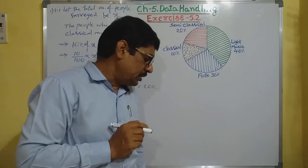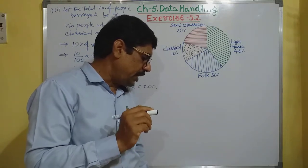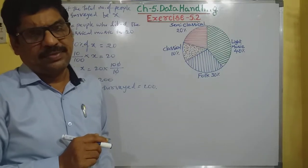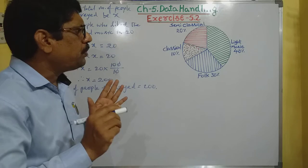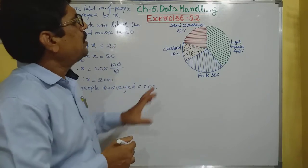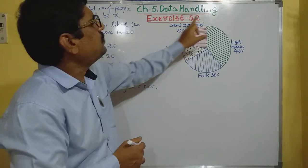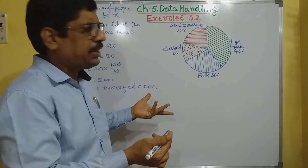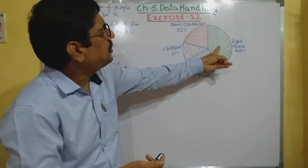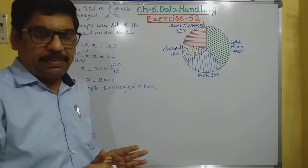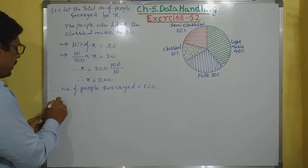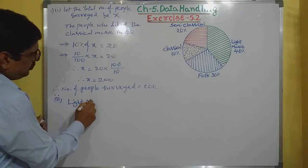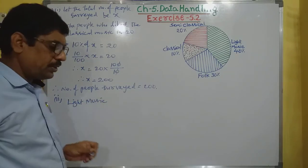The second question: which type of music is liked by the maximum number of people? By looking at the picture we can see which sector has the biggest size — that is the green one, light music at 40%. So the answer for the second question is light music.